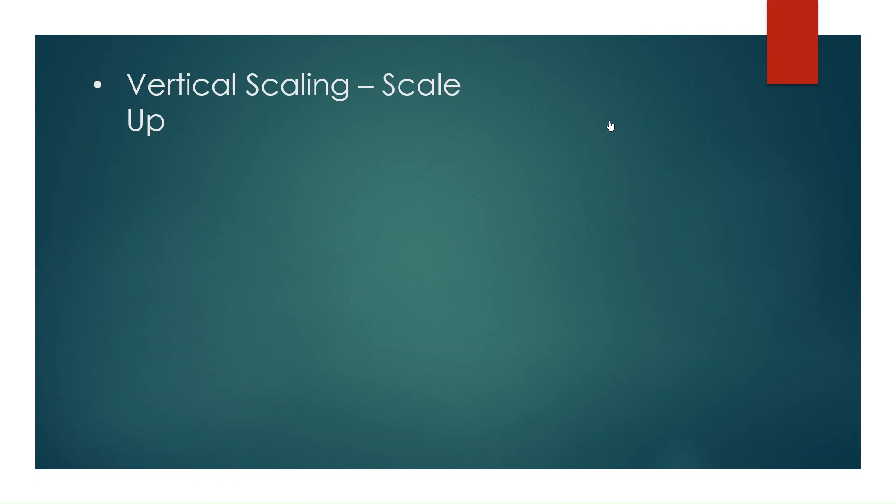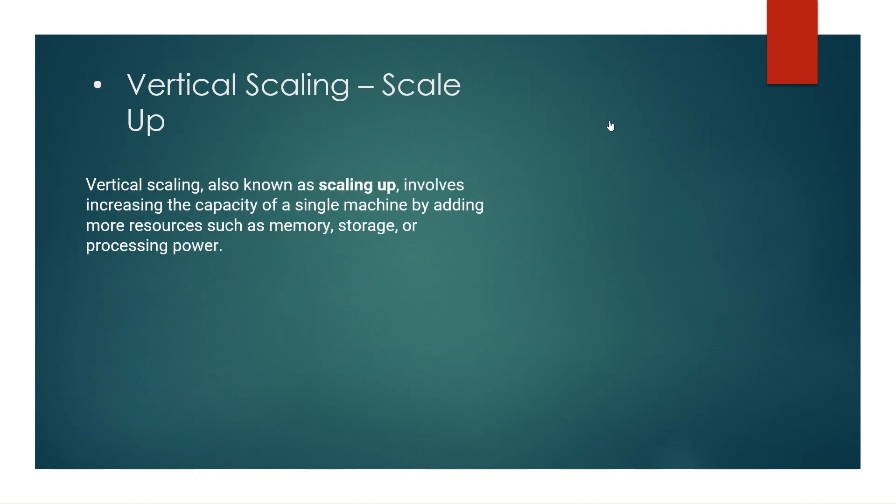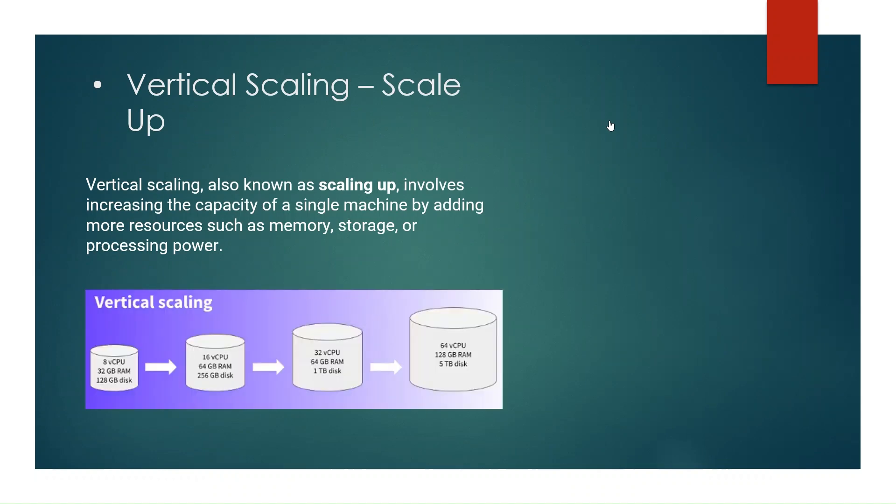Let's see what is vertical scaling or scale up. Vertical scaling involves increasing the capacity of a single machine by adding more resources such as memory, storage, or processing power. If we see in the diagram, we have a single server, but during scaling up we are adding more CPU, RAM, and storage to the same server.